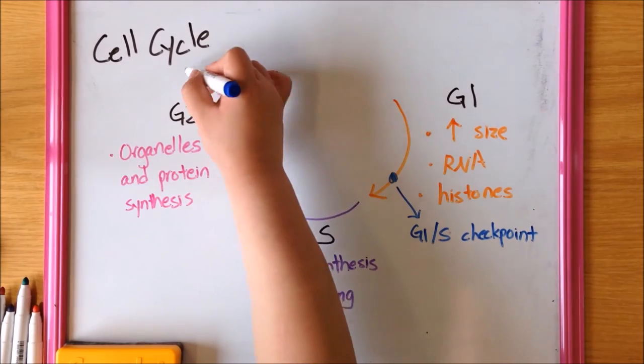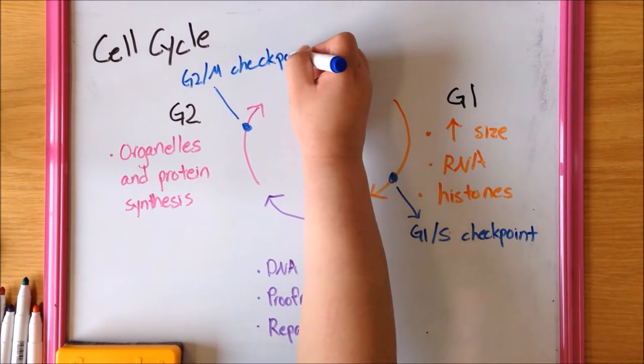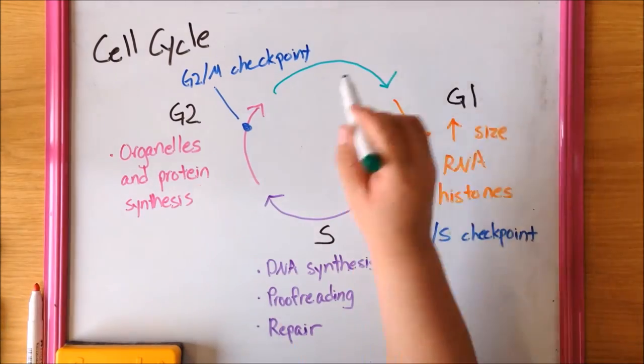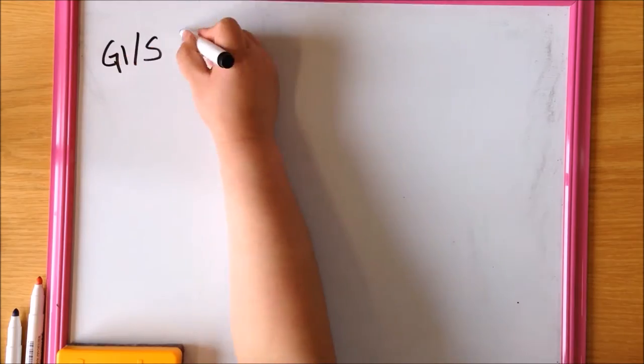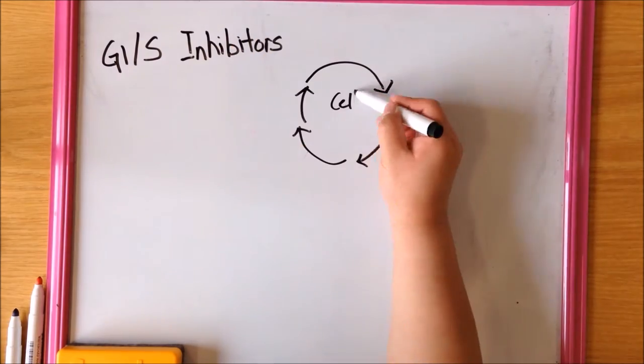G1, G2, and S make up the interphase. The final phase is M, which stands for mitosis. This is the phase in which the cell actually divides. The G1S checkpoint is particularly important in maintaining the integrity of cellular DNA.